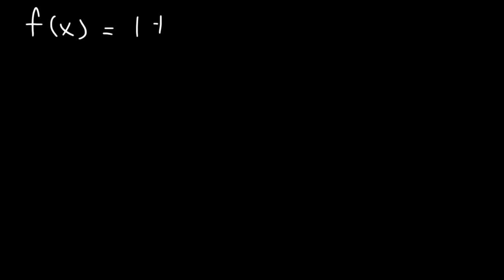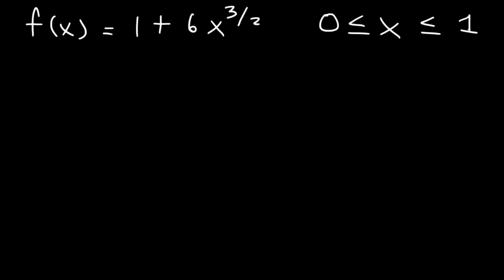Now let's work on an example. Let's say that f of x is 1 plus 6 times x raised to the 3 over 2 power, and we want to find the length of the arc from 0 to 1. You can also write it like this. Feel free to pause the video and try this example. Clearly, we can see that A is 0 and B is 1.